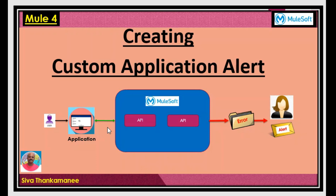That will help us capture a particular keyword that occurs due to the error. With the help of that keyword, we are going to create an email alert which will eventually send an email to the ops team. The ops team member can look at this email, jump into the corresponding application, dig into the logs or database, capture that error, find out, and deal with it. Let's get started into the demo.